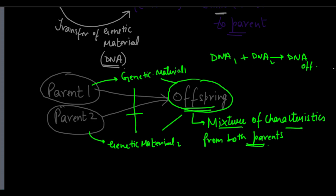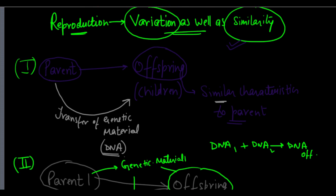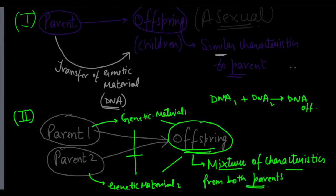In the first case — one parent producing an offspring and just transferring its genetic material — this produces exact similarity with the parent, with very little variation. This form of reproduction is called the asexual form of reproduction: a form involving only one parent organism producing its offspring, where there is just a transfer of genetic material from parent to offspring and very little or no variation at all.